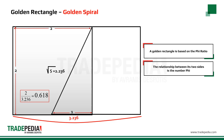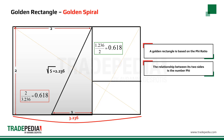Now if we draw a diagonal across the whole rectangle, where it crosses the line is again the golden ratio. Here we have another rectangle where one side is 2 and the other is 1.236. Dividing 1.236 by 2 again gives 0.618, so again we have a golden rectangle. We can draw another diagonal, and where it crosses the line we get yet another golden rectangle. We can continue doing this forever, always creating a golden rectangle after a golden rectangle.